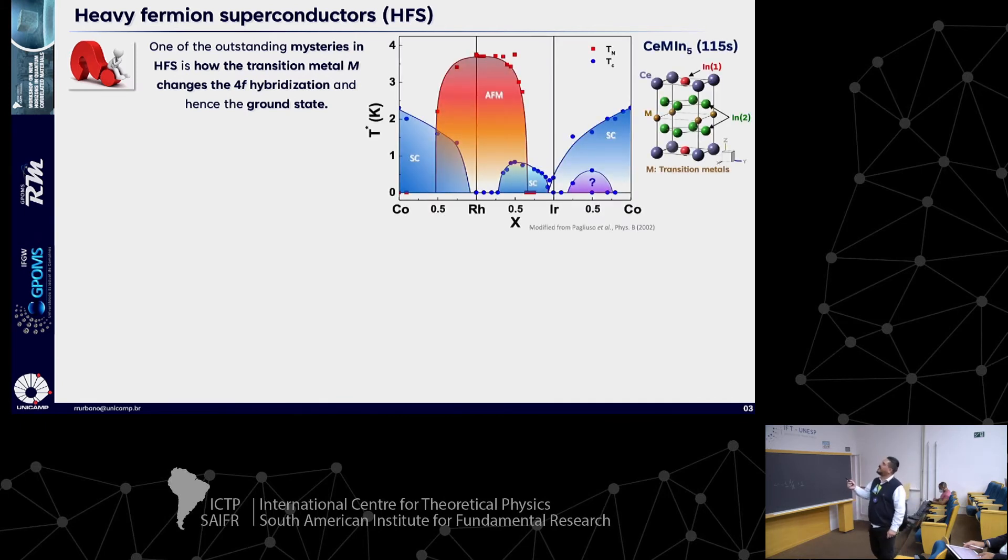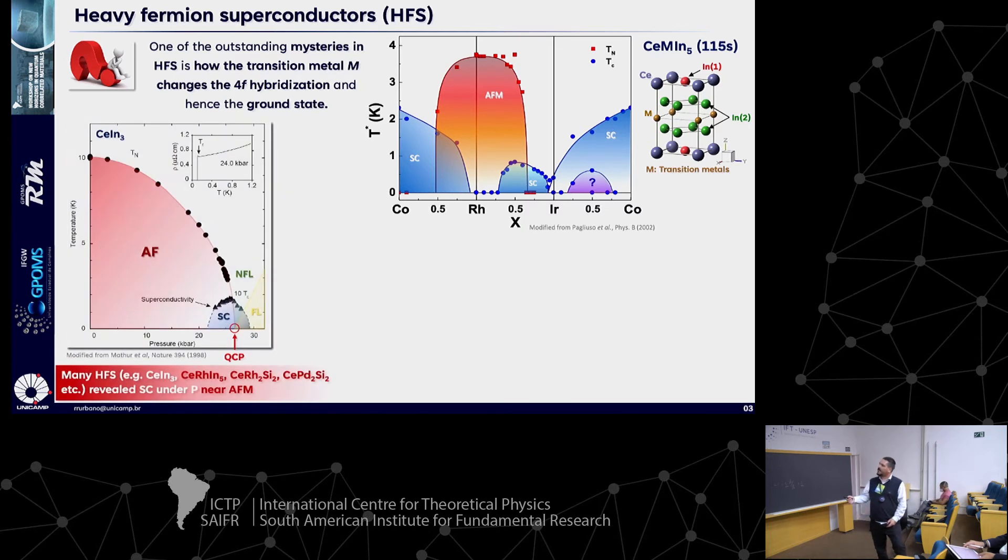As we can see here in this phase diagram, there are many ground states and some coexistence between them. It's very complex. By applying pressure or changing some other control parameters like doping or magnetic field, we find interesting things in these materials. Cerium-Indium-3 is a very simple one that under pressure displays superconductivity, again at the verge of this magnetism and with quantum criticality.